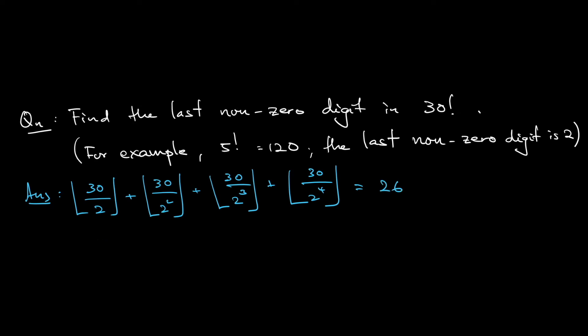So this is basically saying 30 factorial, you would have 2 to the power of 26 as a factor. Not 27, but 26 is the largest one.